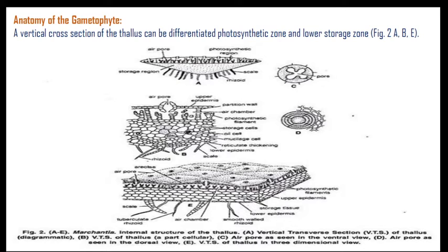Within the actual cell arrangement, these are the photosynthetic zones. The chambers are separated with the help of four to five cell partitions, and in between them there is a photosynthetic filament filled with chlorophyll. These are the air pores, acting like stomata, and above them is the upper epidermal protective layer. The storage zone possesses parenchymatous cells which are pentagonal to hexagonal in shape, resulting in minimum intercellular spaces.